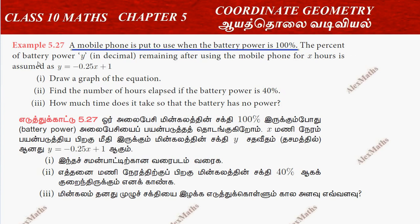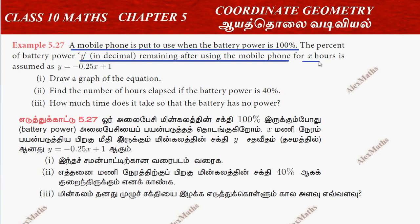The percentage — the percent of battery power y is in decimal, remaining after using the mobile phone for x hours. This is a linear equation: y is equal to minus 0.25x plus 1.